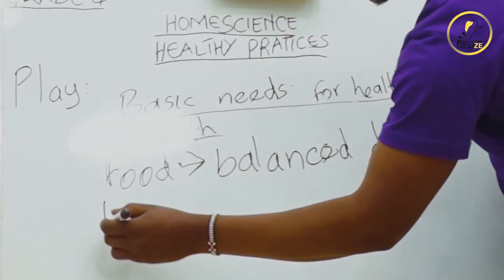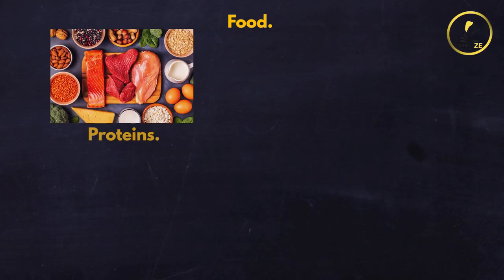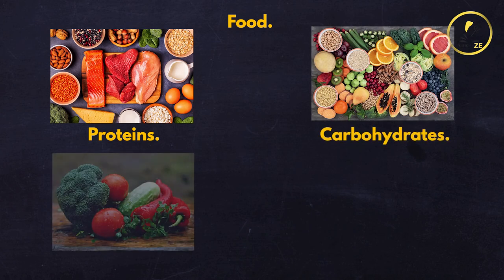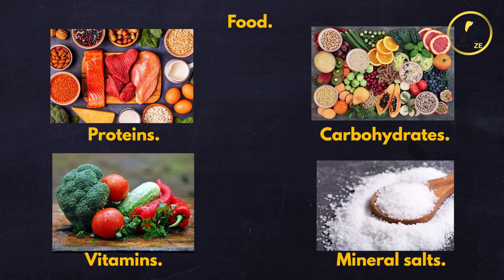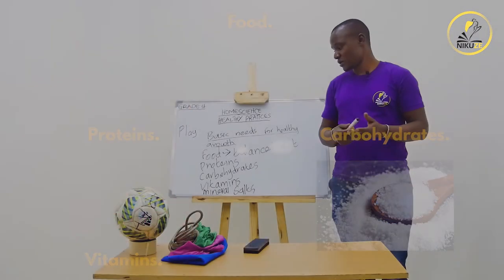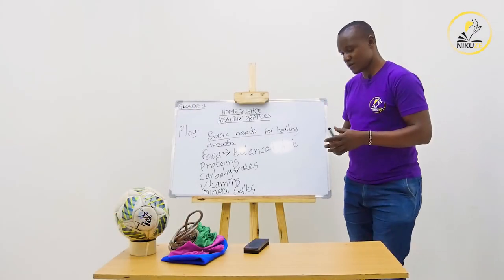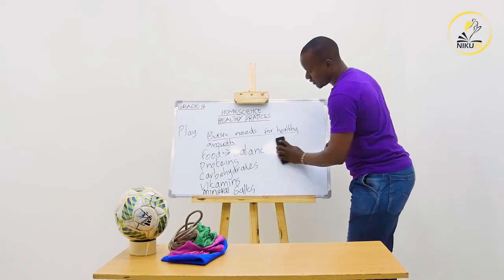A balanced diet includes proteins, carbohydrates, vitamins — which come from things like fruits — and mineral salts. We should also ensure that in our diet we take enough, or adequate, water.